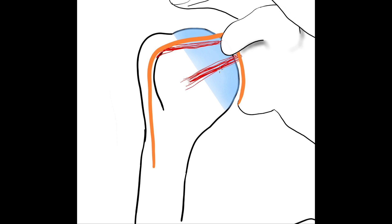The middle glenohumeral ligament is loose in internal rotation and tightens in external rotation. The inferior glenohumeral ligament originates anteriorly and posteriorly from the inferior half of the labrum and inserts into the edge of the articular surface of the humeral head. It forms a hammock-like structure which prevents the humeral head from sliding inferiorly out of the glenoid fossa. This ligament is loose in adduction and tightens in abduction.